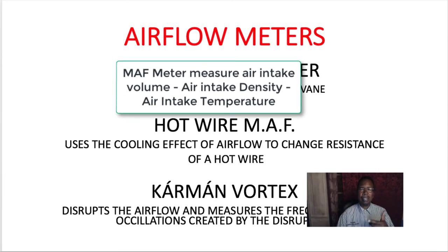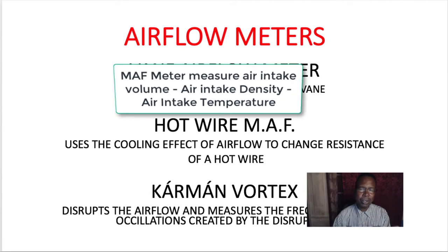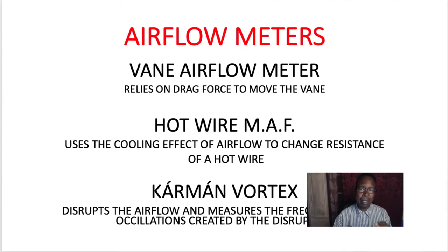The hot wire mass air flow sensor uses a cooling effect. It's a hot wire — air goes across it and cools the wire down. The computer sends current to heat it back up to a predetermined temperature, and by measuring how much current it sends, it can tell how much air is going to the engine.